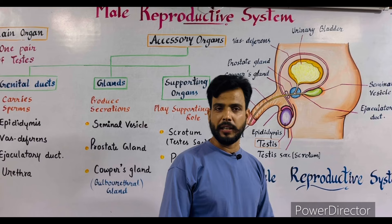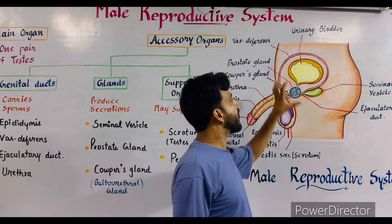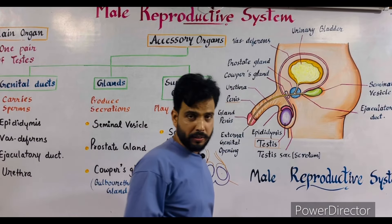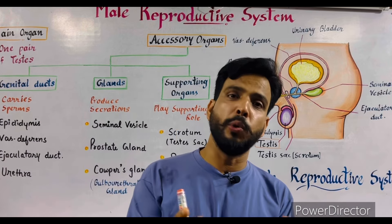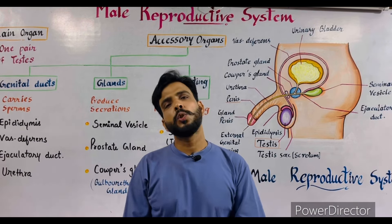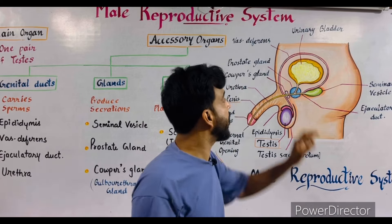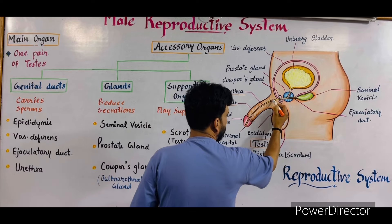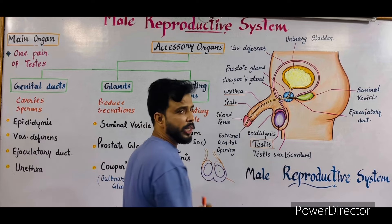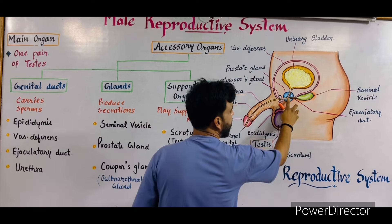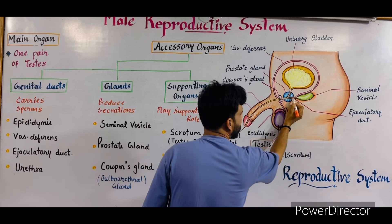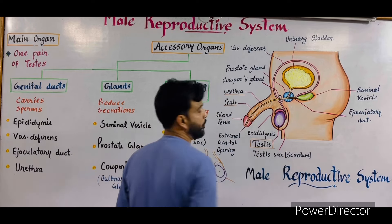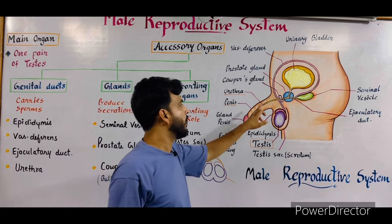Now regarding the urinary system — this bag-like structure is the urinary bladder. Our kidneys produce urine, which passes through the ureters and collects inside the urinary bladder. From the urinary bladder, the urethra arises. This tube — the urethra — carries urine outside the body and is also attached to the ejaculatory duct. So the ejaculatory duct pumps semen into the urethra while the urinary bladder passes urine through the same urethra.